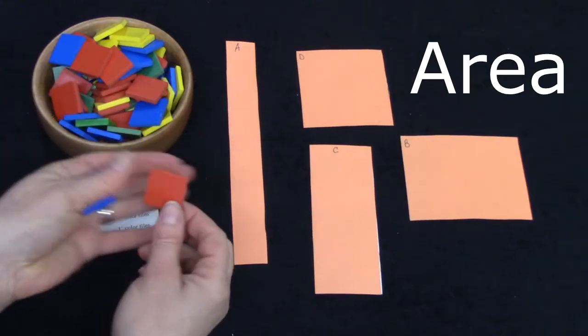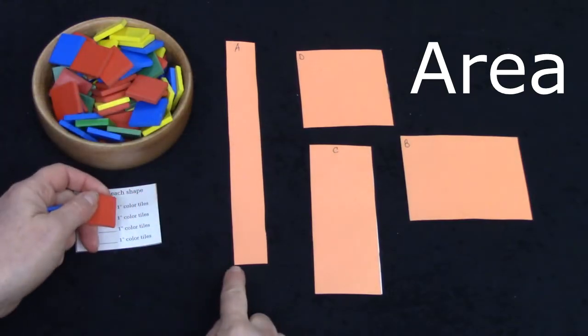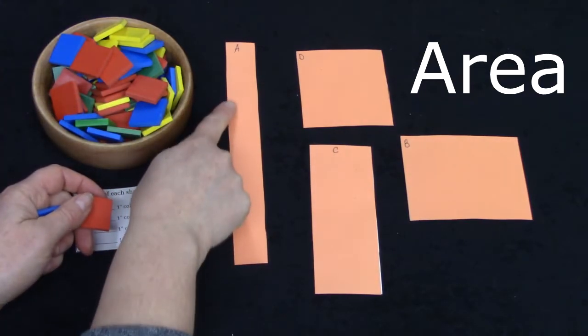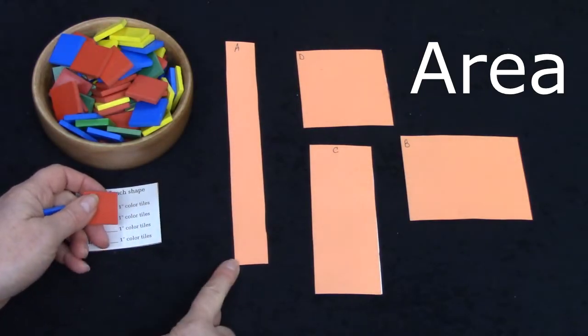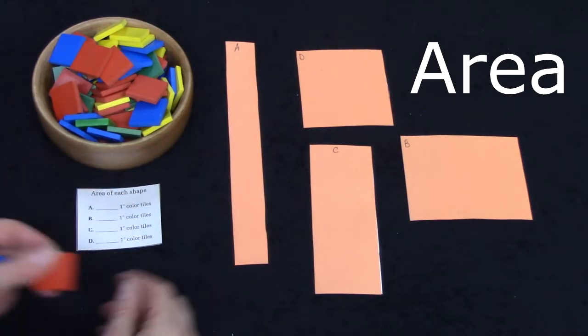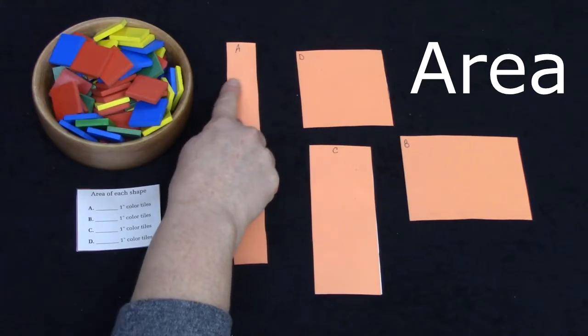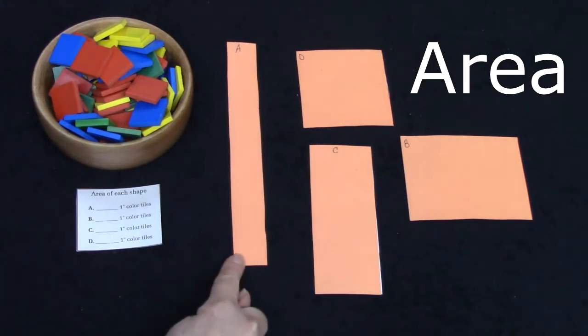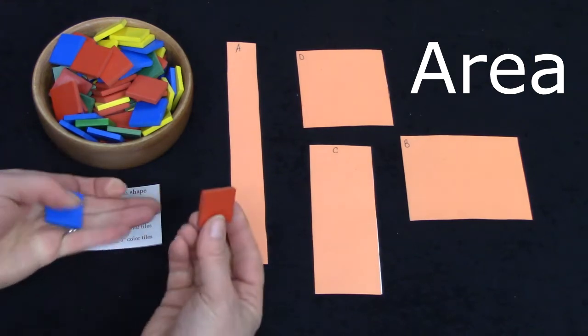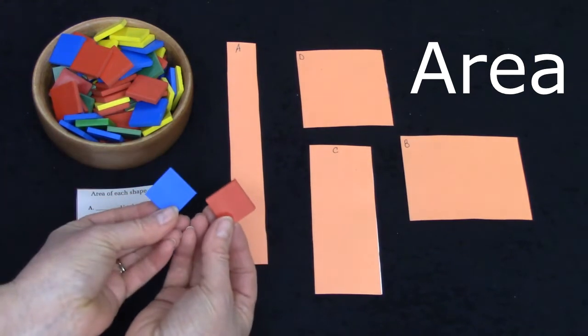Today we are going to be measuring the area of these shapes using one inch tiles. Often when we're measuring something we measure how wide or how tall something is or how long. When we measure the area we're measuring all of this space between how long something is and how wide something is. We're going to be using one inch squares to do that.